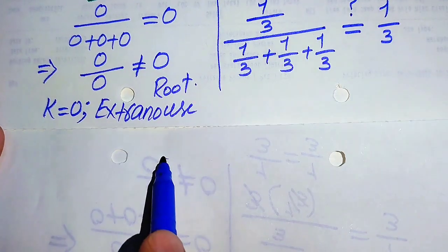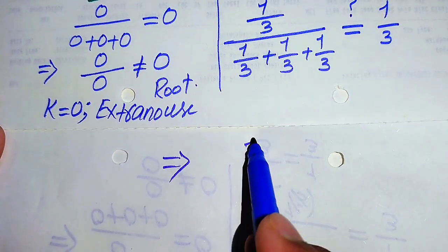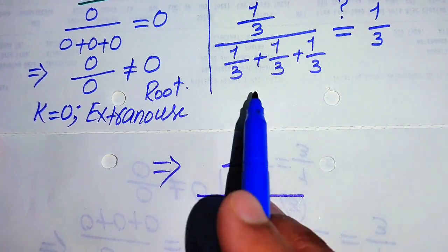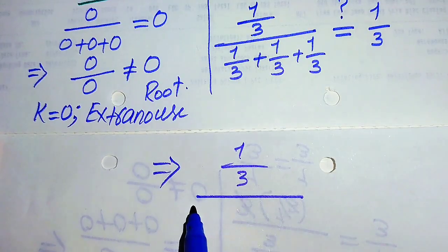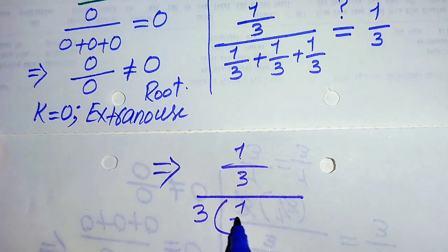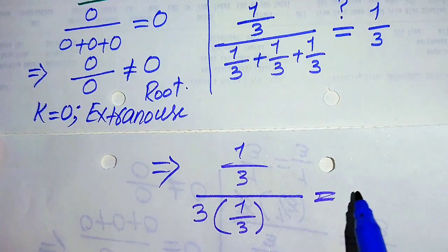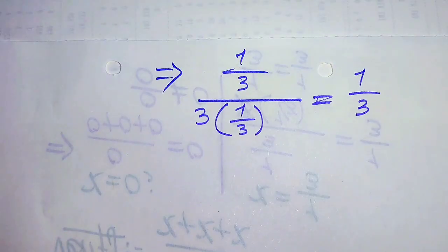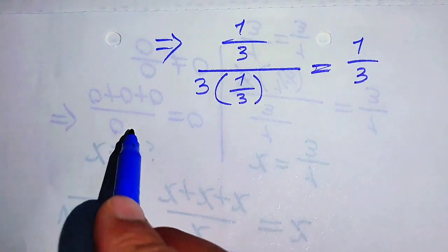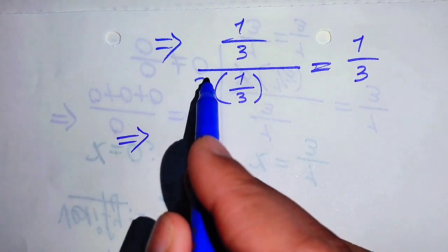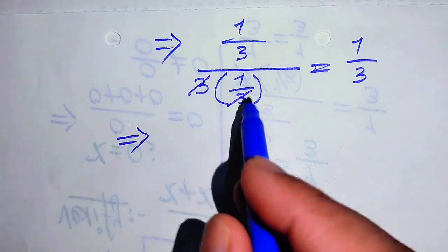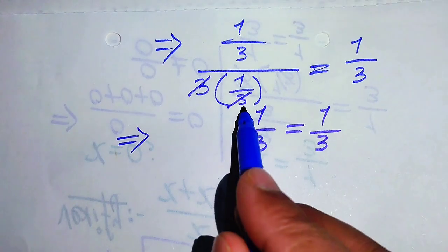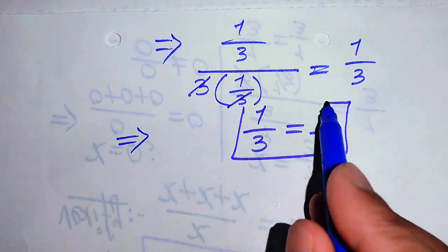Simplifying further: the denominator 1/3 + 1/3 + 1/3 equals 3 times (1/3). So we have (1/3) divided by 3×(1/3). The 3s cancel, giving 1/3 equals 1/3. Both sides are clearly equal.